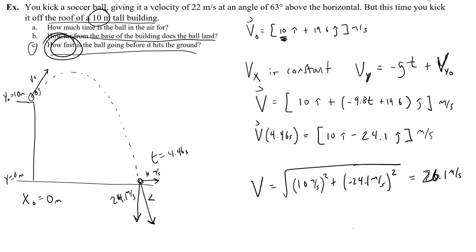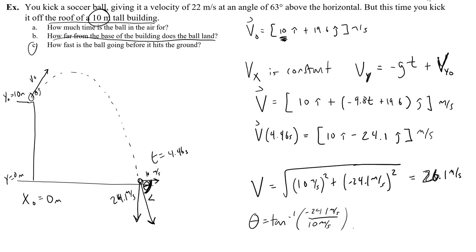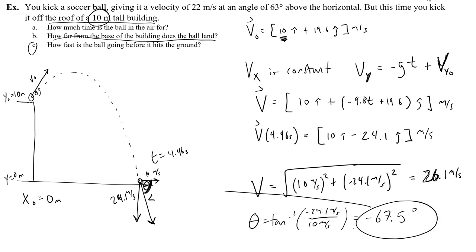For the angle: tan⁻¹(vy/vx) = tan⁻¹(−24.1/10) ≈ −67.5 degrees. That angle makes sense because the ball is moving down and to the right — in the fourth quadrant.